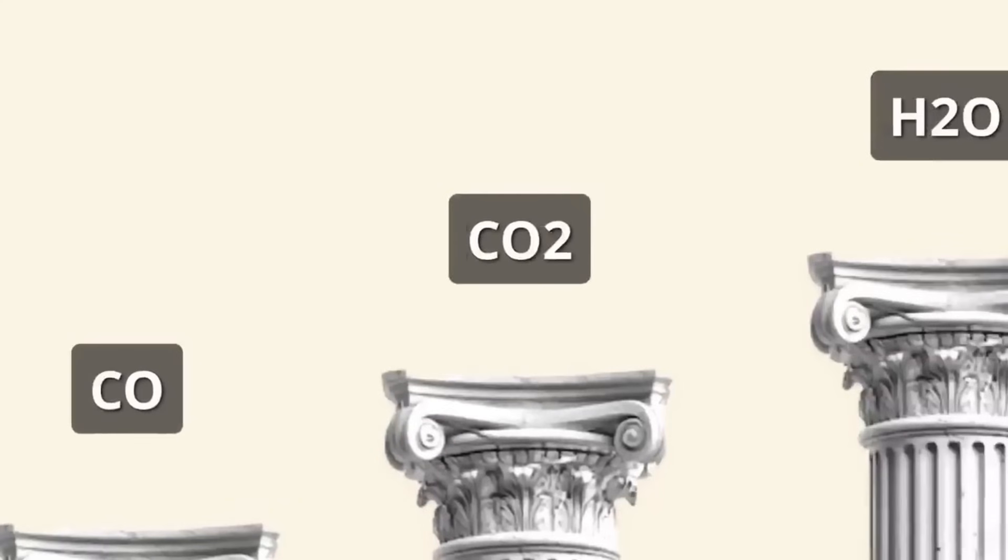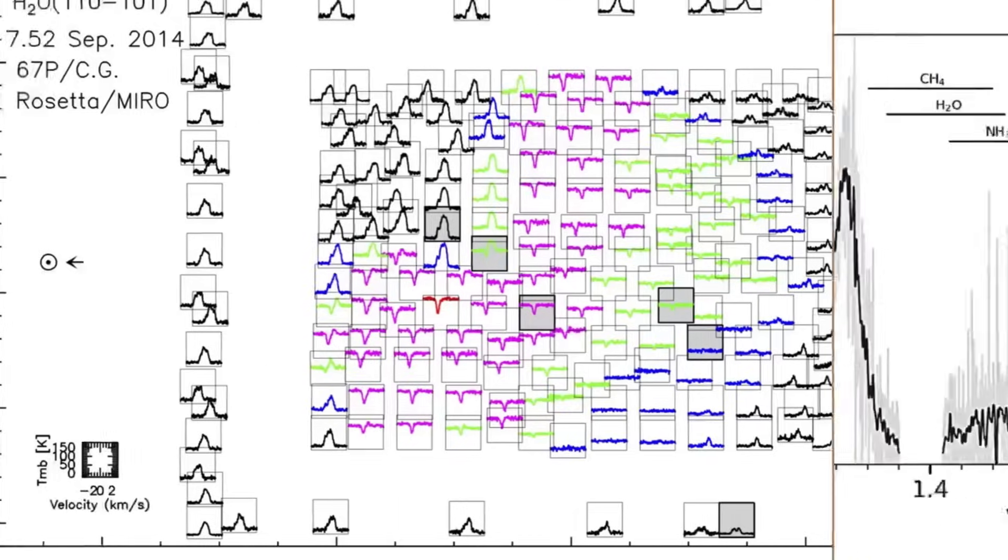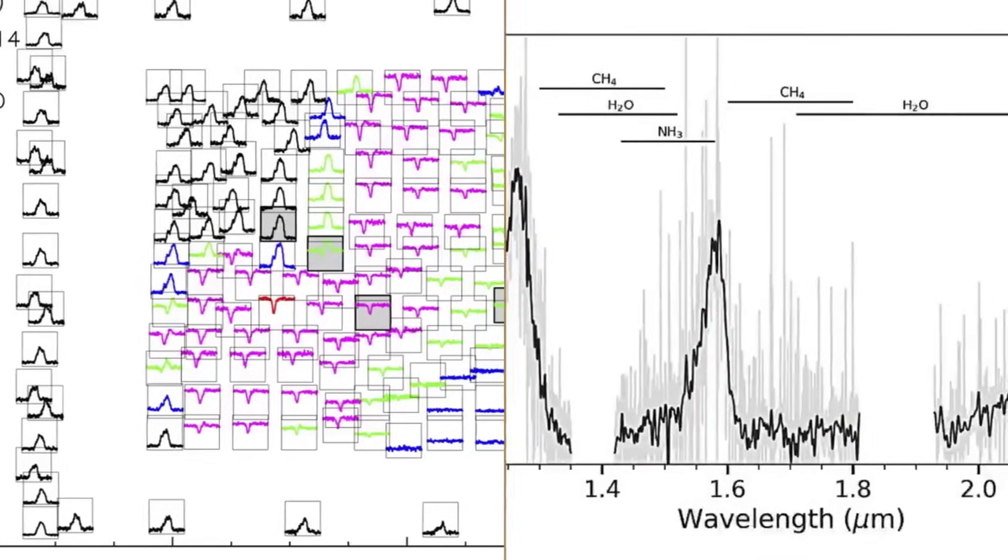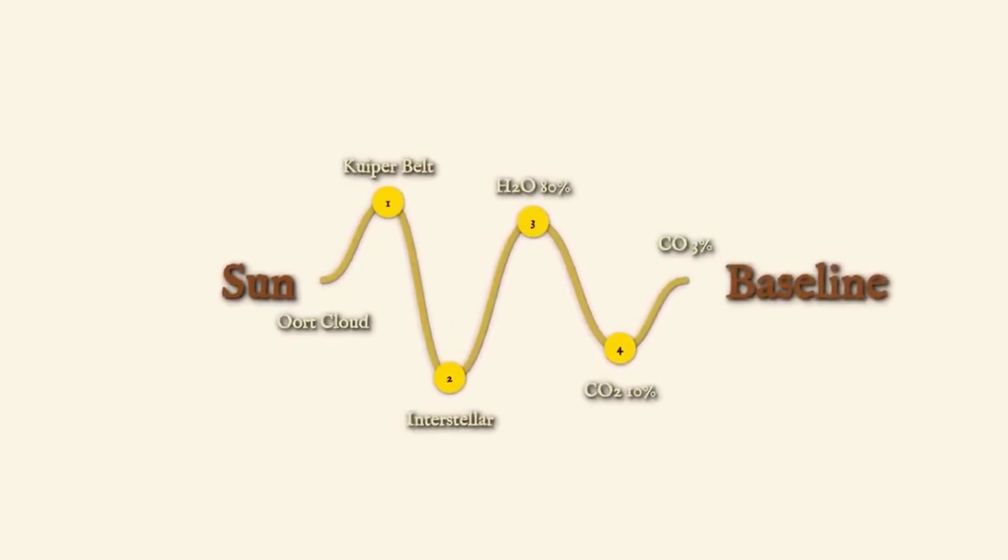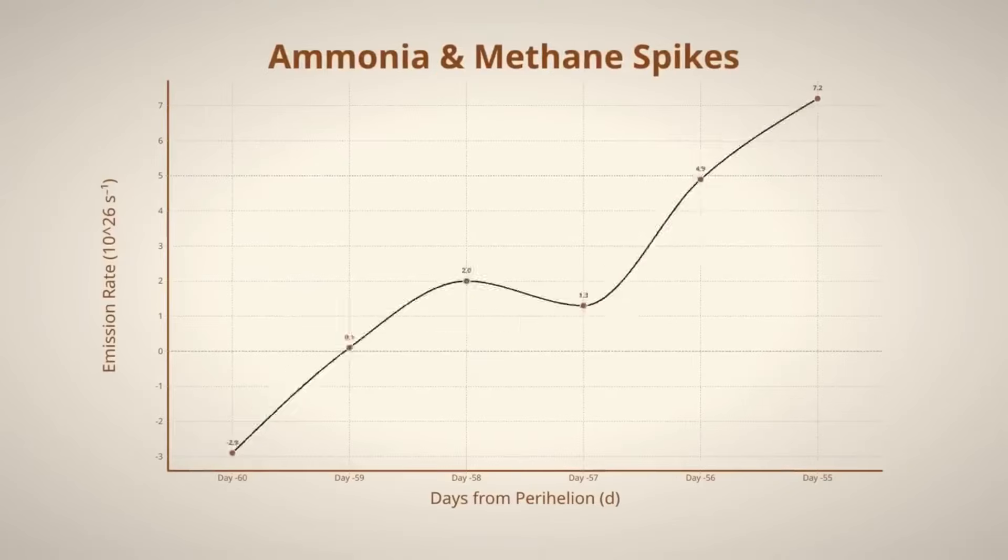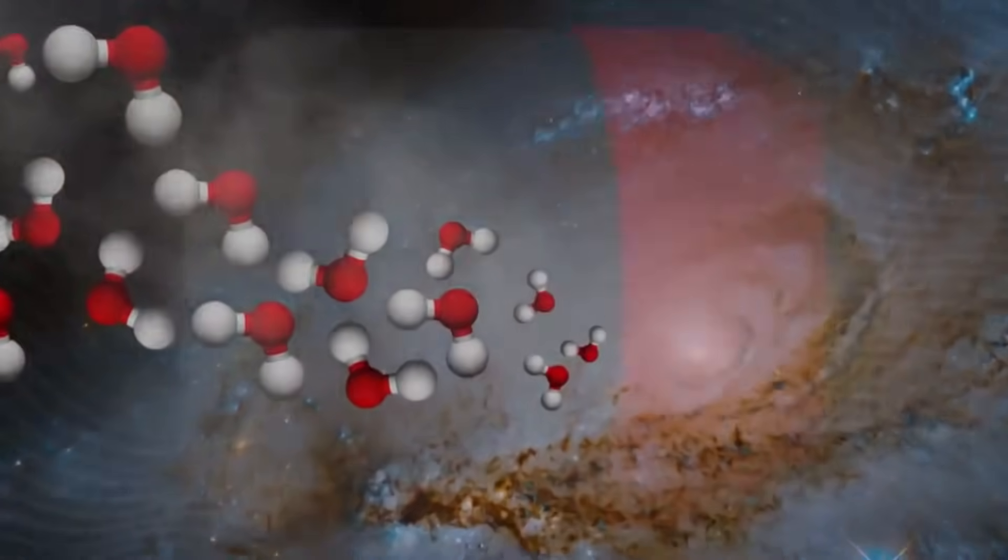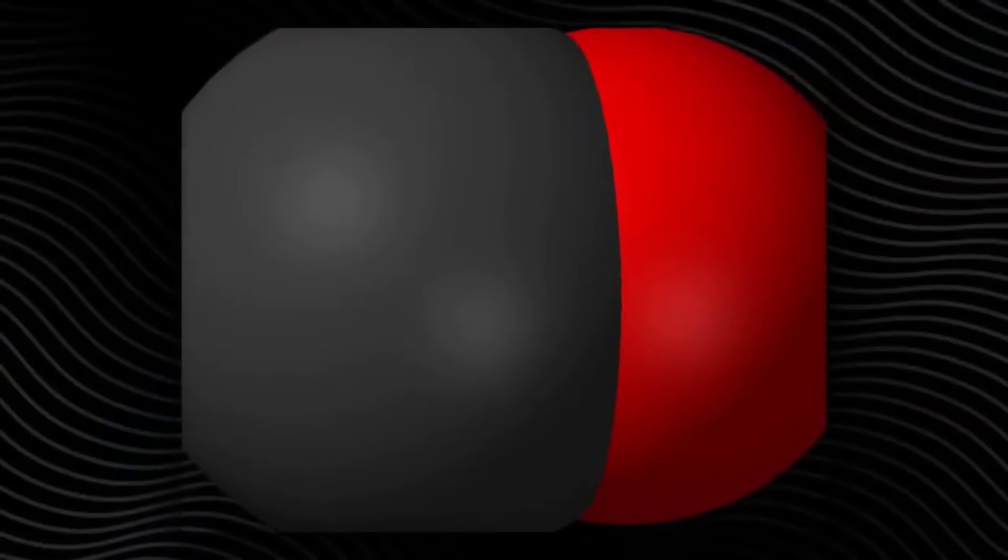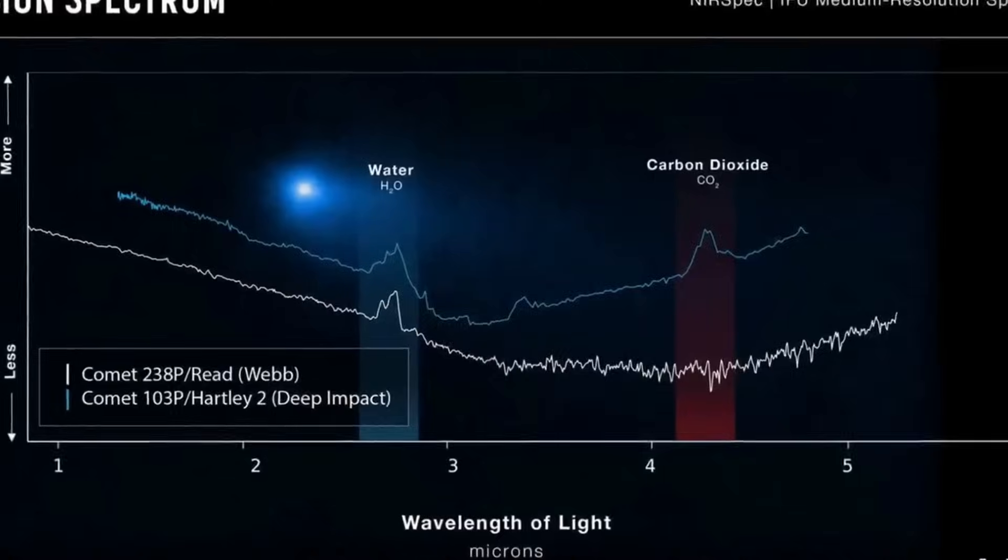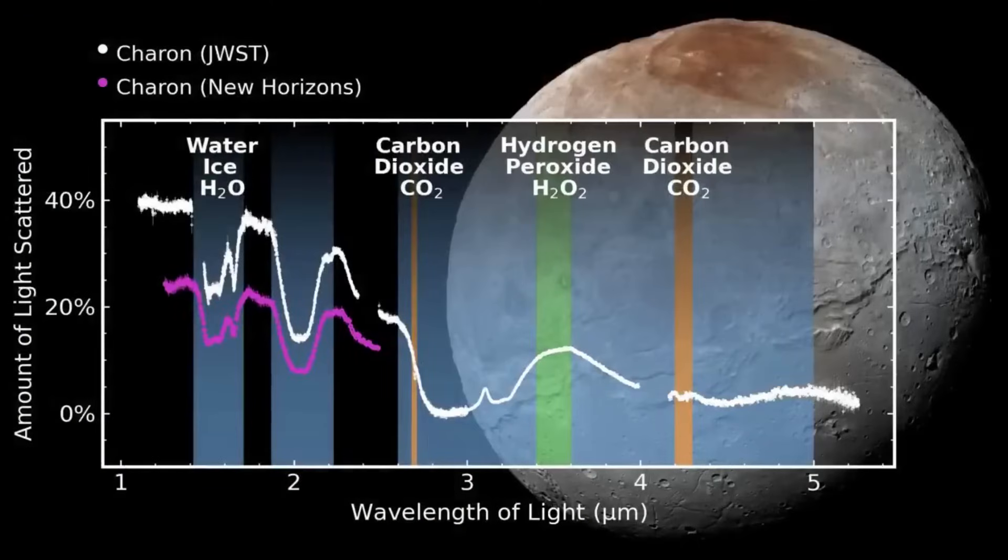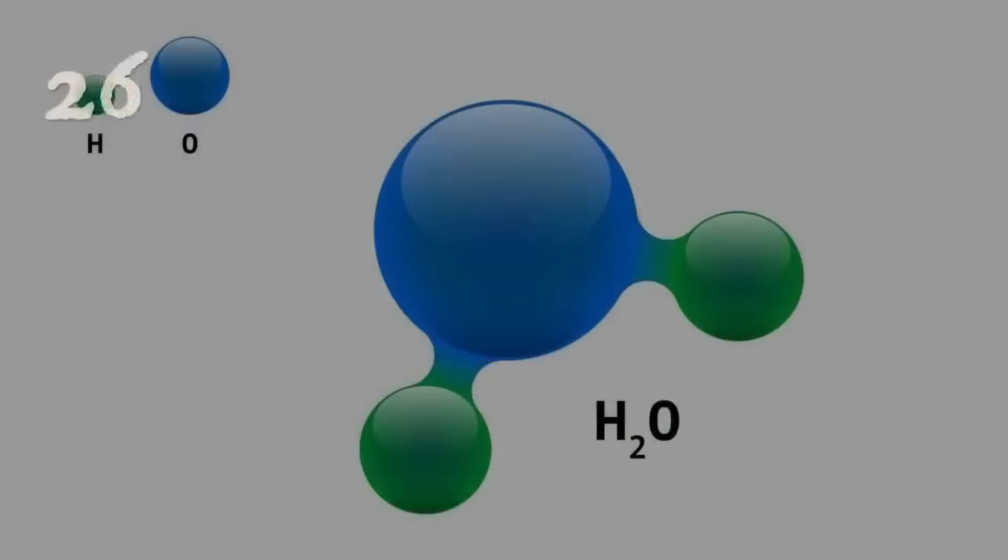For as long as humans have been watching the night sky, comets have captured our imagination. These beautiful visitors with their glowing tails have been called dirty snowballs, and that nickname actually tells us a lot about what they're made of. Think of a comet like a giant ice cube filled with dust and rocks, frozen solid in the coldest parts of space for billions of years. When one of these cosmic ice cubes gets close enough to our sun, something magical happens.